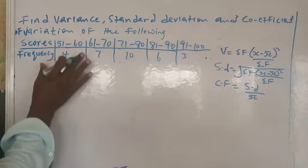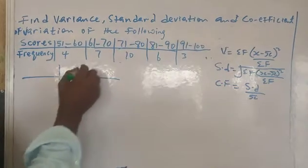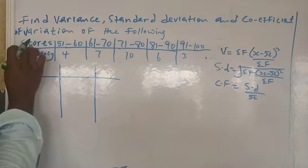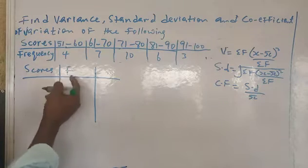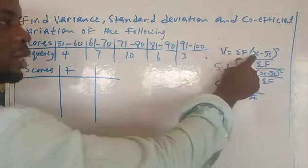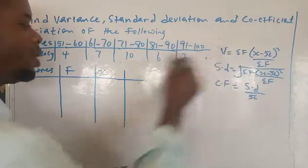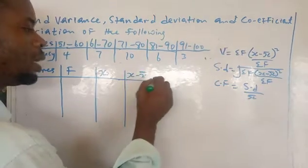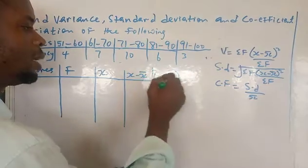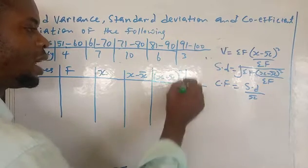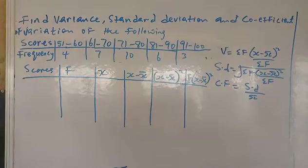Now let's start. To find variance, draw your table. We need columns for: scores, frequency (f), x (midpoint), x minus mean, (x minus mean) squared, and f(x minus mean) squared.